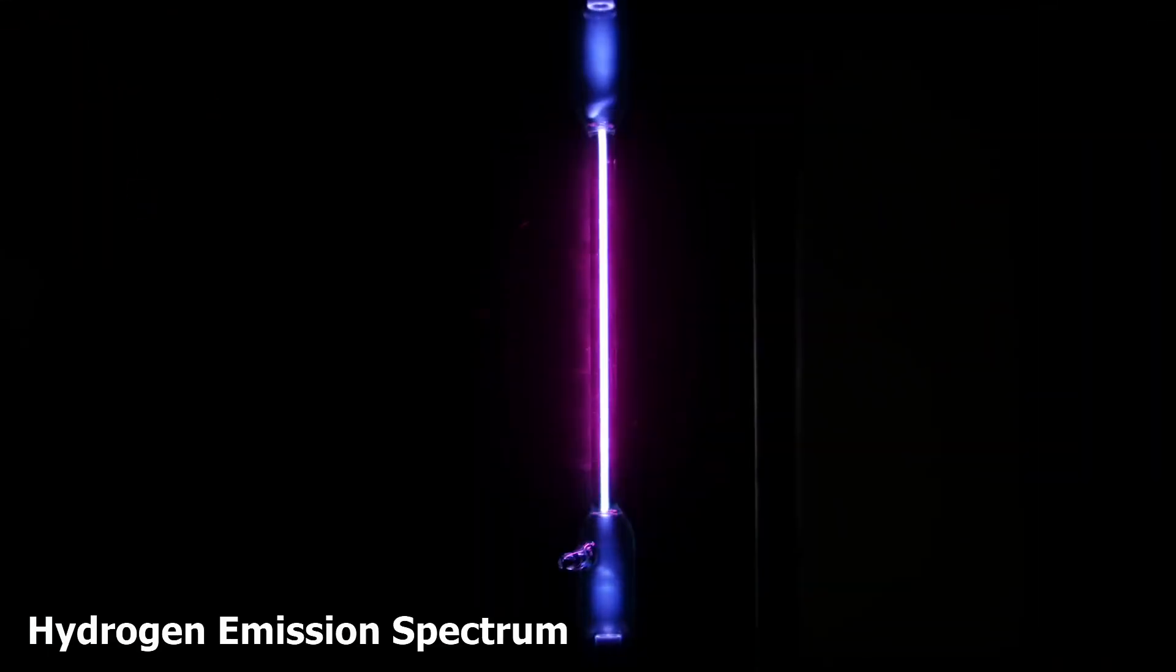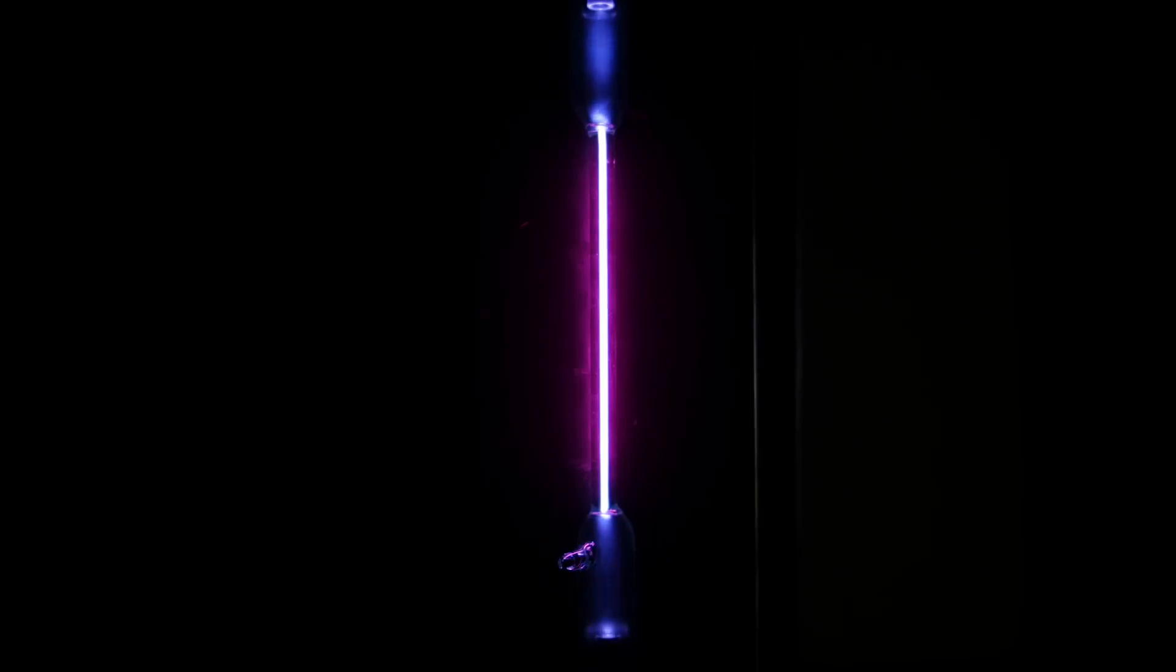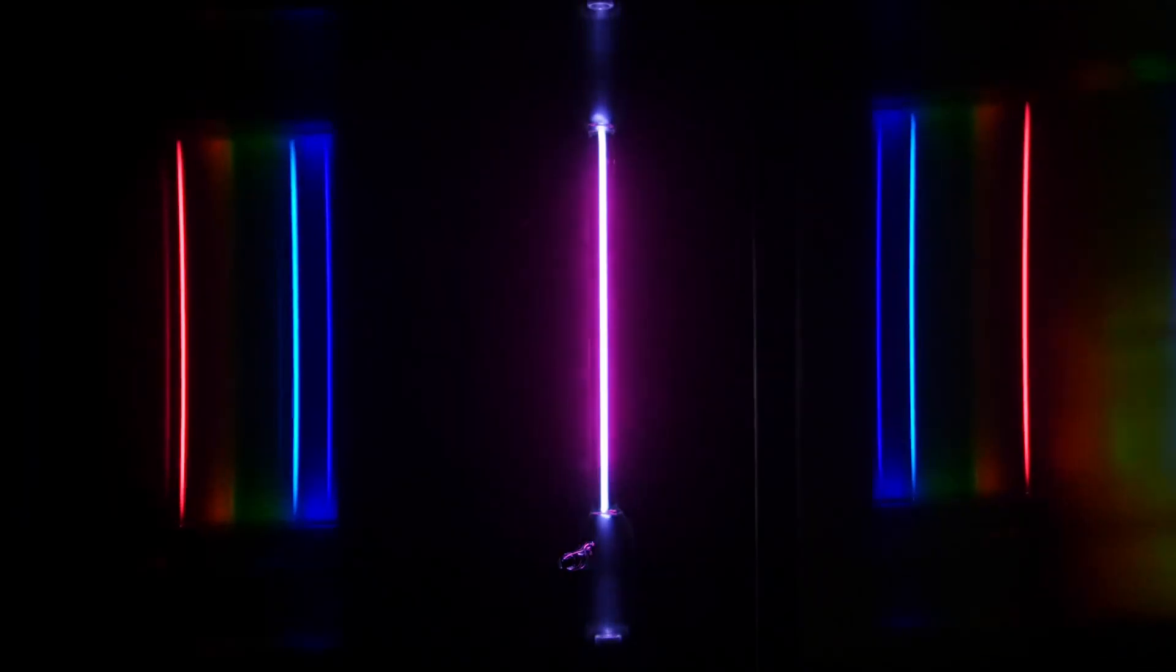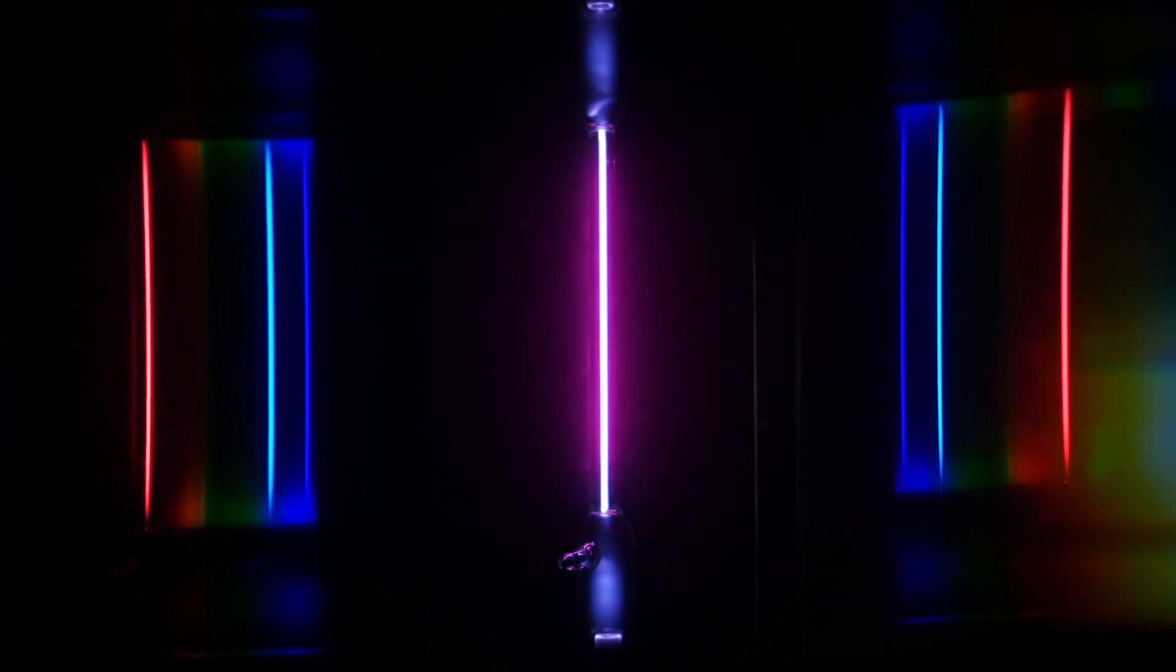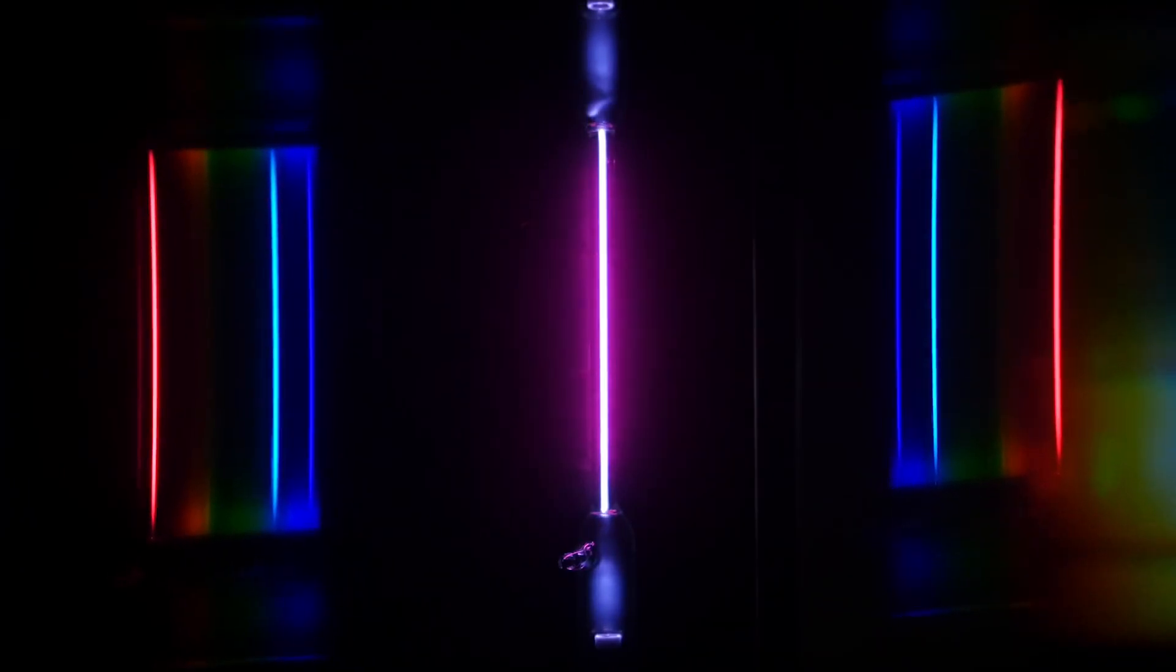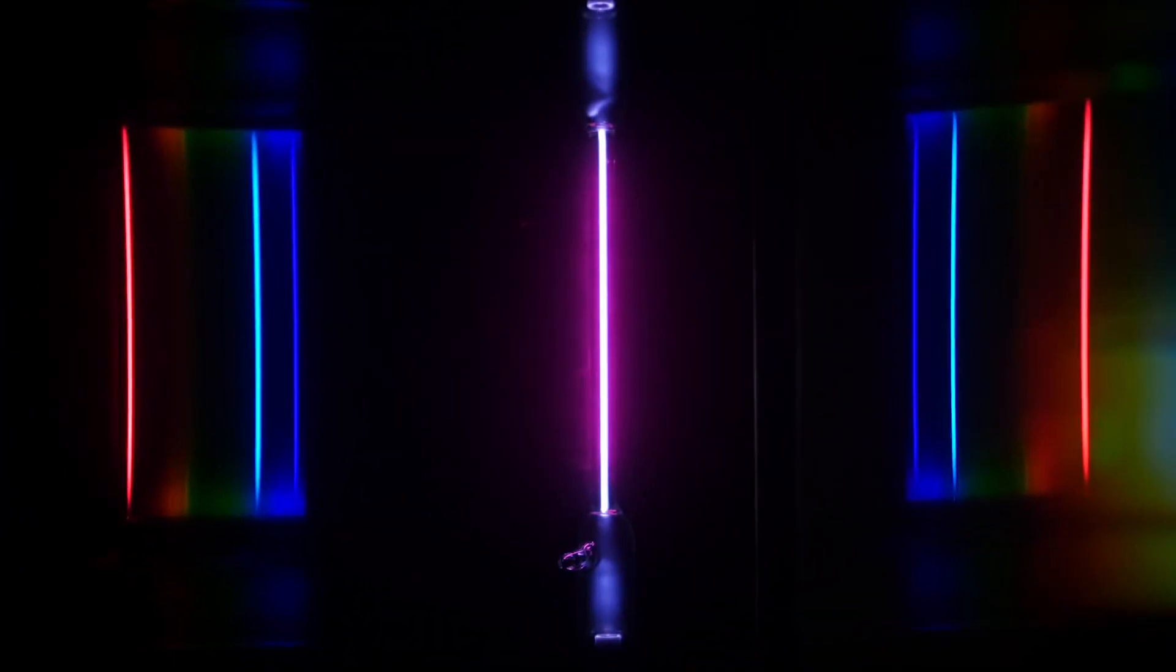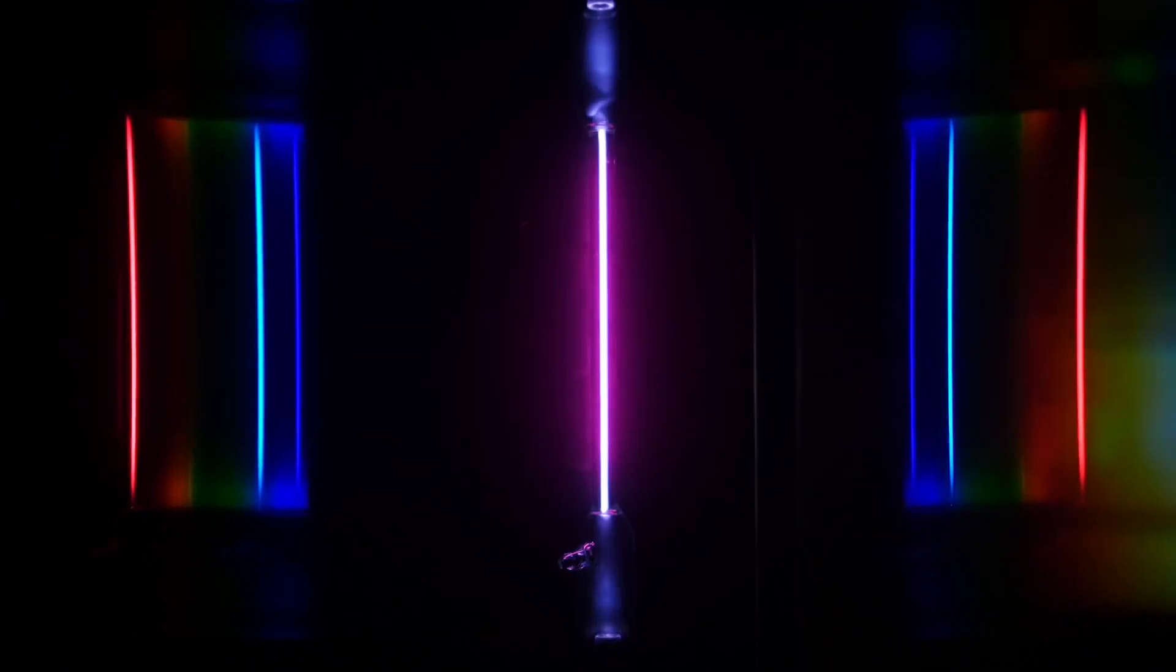So this is hydrogen. It has a reddish cast to it. And when the diffraction grating is in place, you'll see three lines. Those lines are associated with transitions of the electron in the hydrogen atom from a higher state to a lower state.